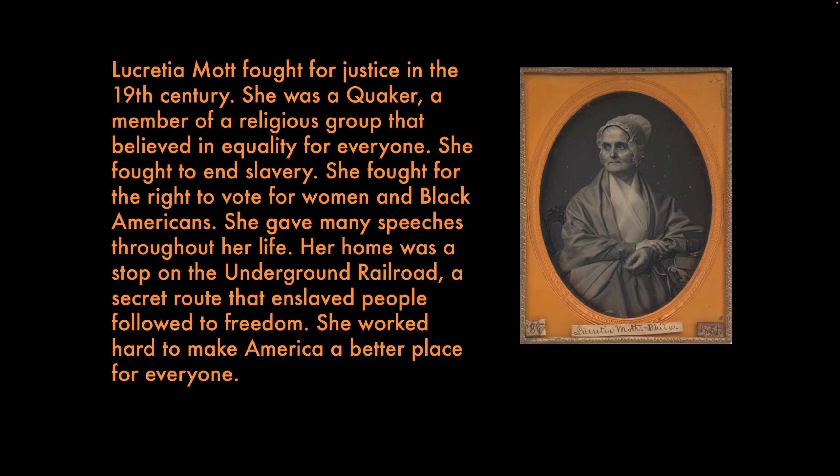Lucretia Mott fought for justice in the 19th century. She was a Quaker, a member of a religious group that believed in equality for everyone. She fought to end slavery. She fought for the right to vote for women and black Americans. She gave many speeches throughout her life. Her home was a stop on the Underground Railroad, a secret route that enslaved people followed to freedom. She worked hard to make America a better place for everyone.